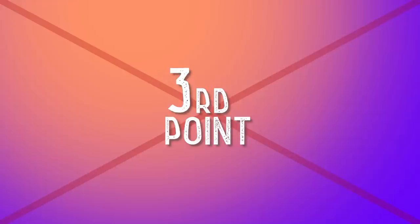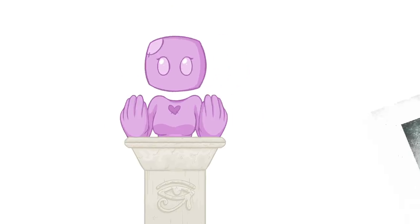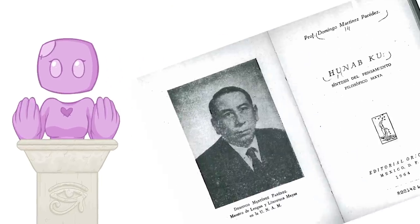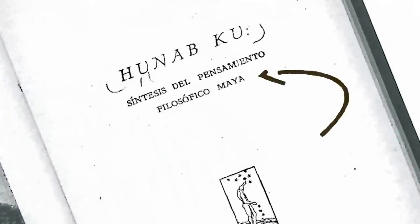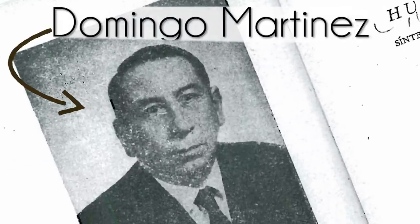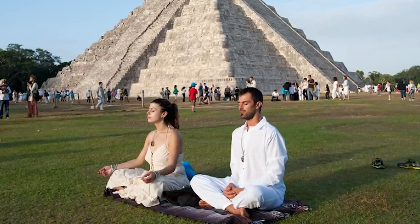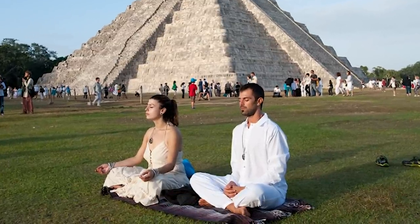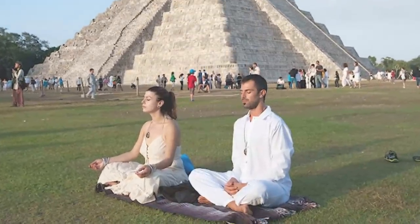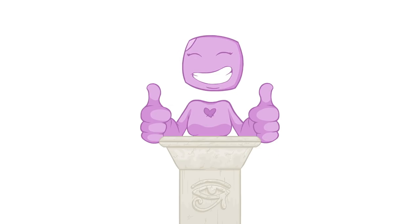And the third point being that the New Age interpretations of Hunabku come mostly from the 1953 book A Synthesis of Maya Philosophical Thought by a guy called Domingo Martinez, which asserts the Hunabku as a monotheistic idea, which underlies much of the New Age belief on the subject. So with that, let's get started.